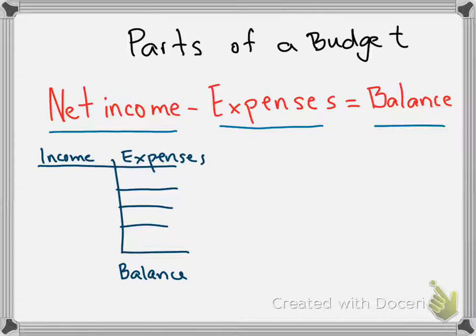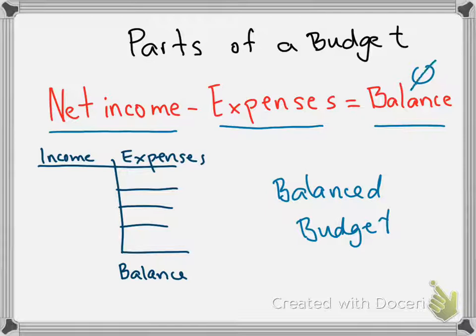You take the net income, subtract all the expenses, and then you get the balance. To have a balanced budget — let me write that down — a balanced budget means that the balance should always be zero. You cannot have extra money there. When you subtract the income minus the expenses, the resulting number should be zero, always.